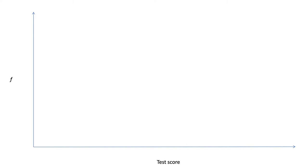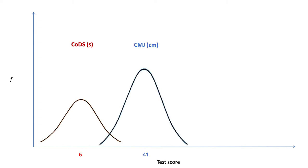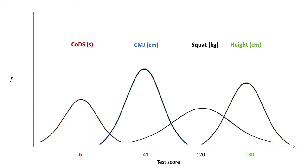When we test enough players, we get a normal distribution for each physical quality. For change-of-direction speed, most people score around the average, with a few who are incredibly fast and a few incredibly slow. The same applies to counter-movement jump height, squat strength, and height — most cluster in the middle, with some exceptional performers and some weaker ones at the extremes, all relative to the tested population.